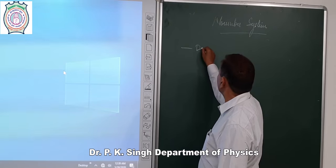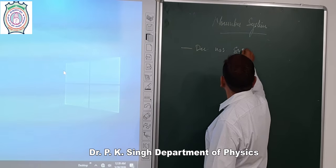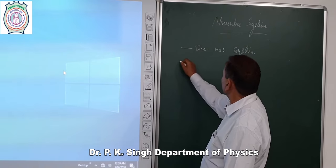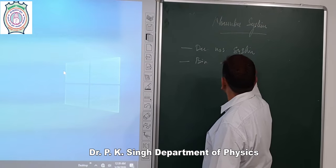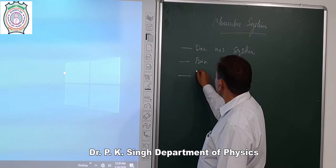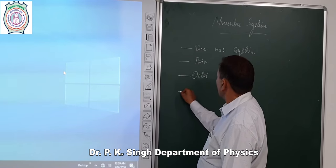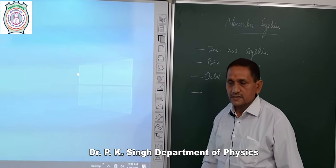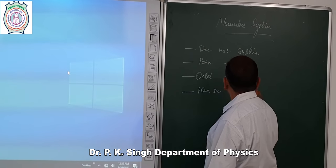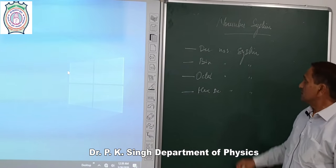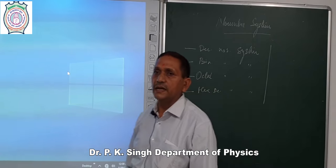First one is decimal number system. Second one is binary number system. Third one is octal number system, and last is hexadecimal number system. These number systems are used in digital electronics.